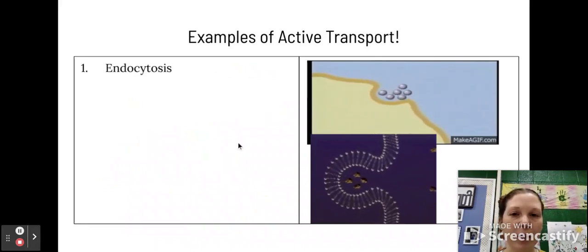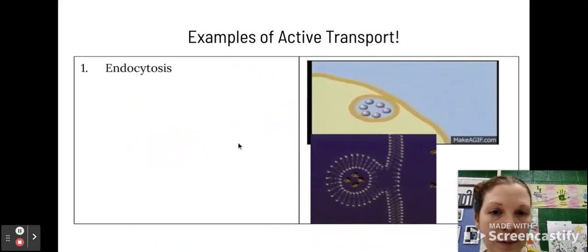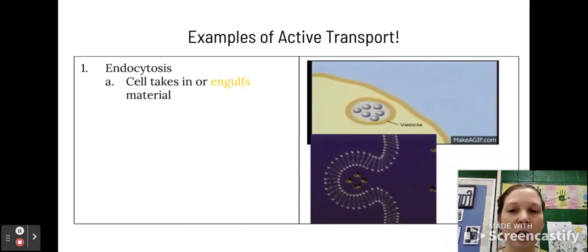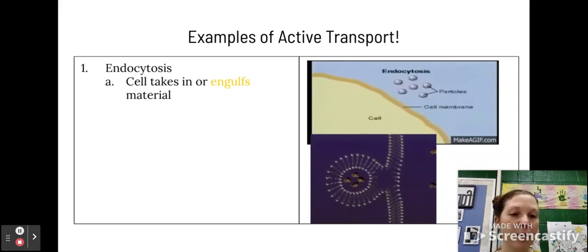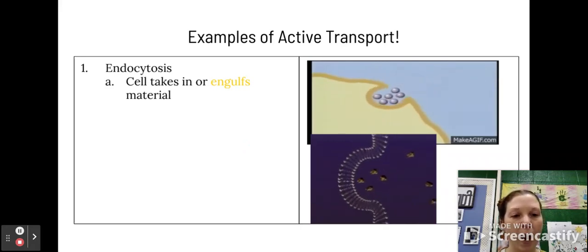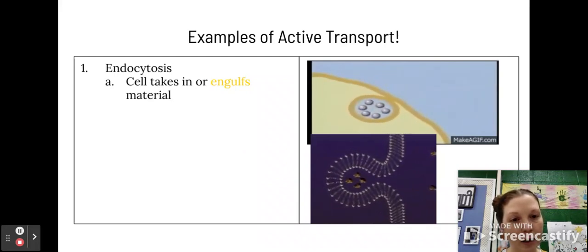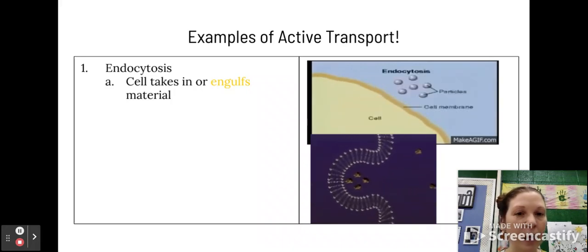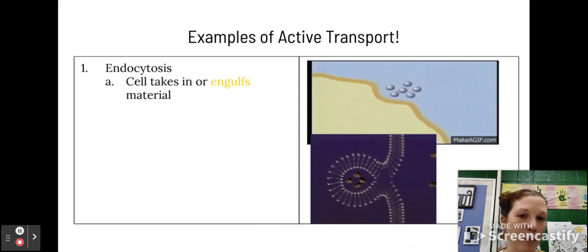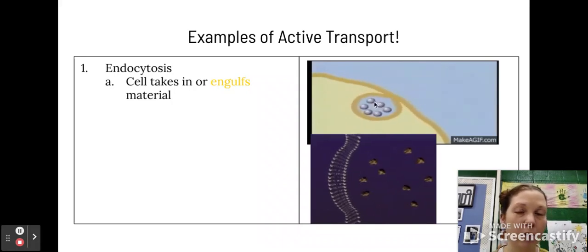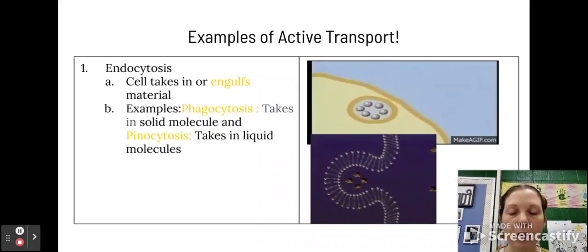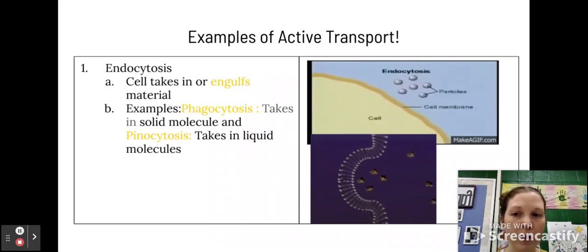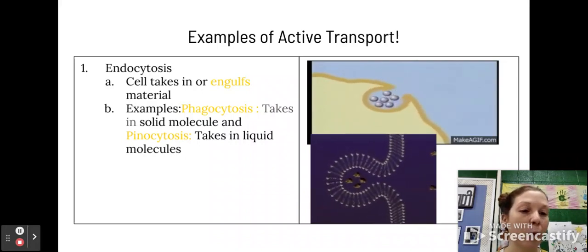So there are some examples of active transport, and one of them is endocytosis. So endocytosis is where the cell takes in or engulfs new material from the outside. The membrane kind of wraps itself around that material, cuts itself off, and moves the material inside via a vesicle. So it has formed its own vesicle with the membrane. And you can see that here in this top GIF, this yellow GIF. There are some examples of endocytosis to know the names of, and that's phagocytosis, which takes in solid molecules, and pinocytosis, which takes in liquid molecules.